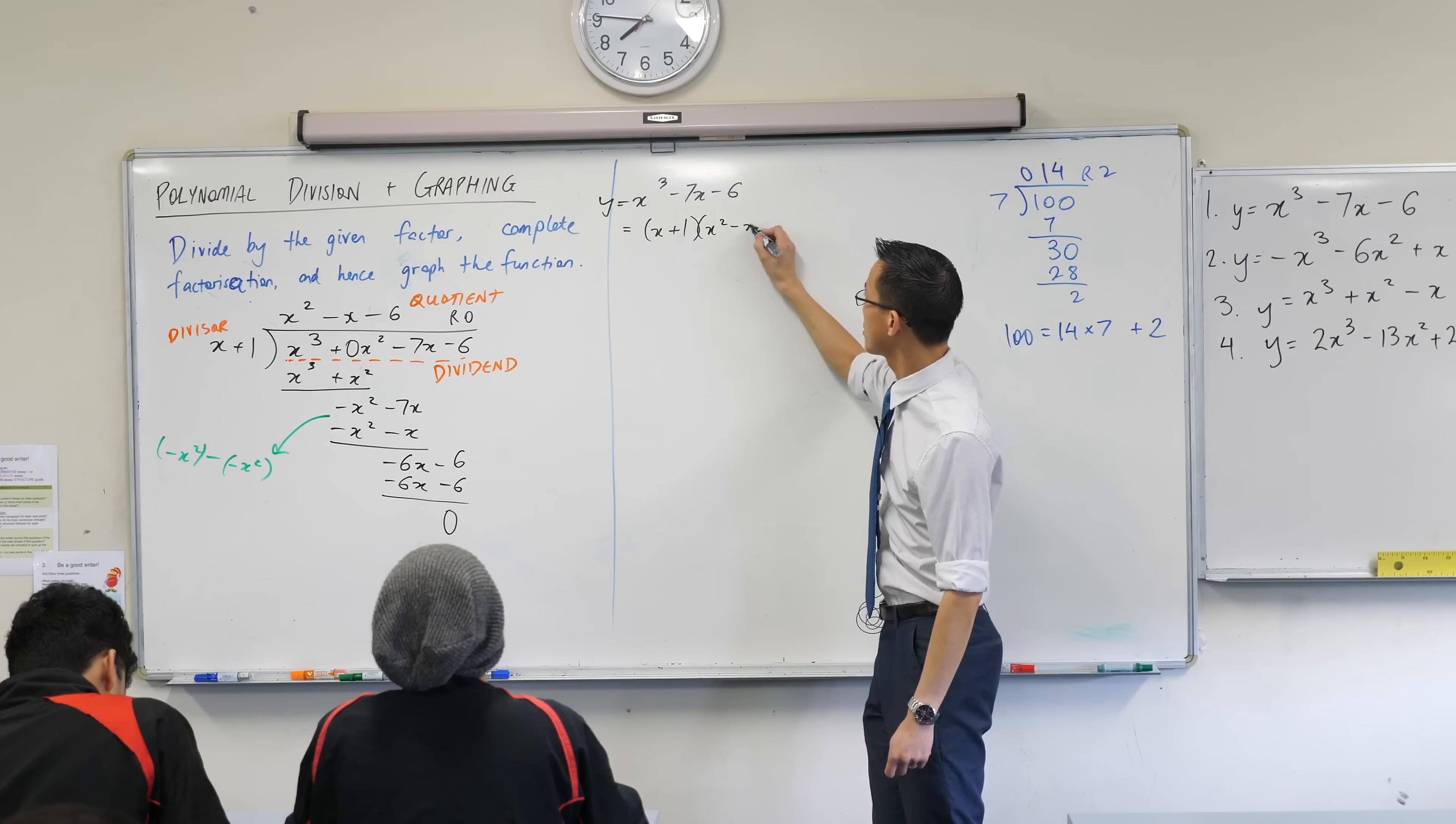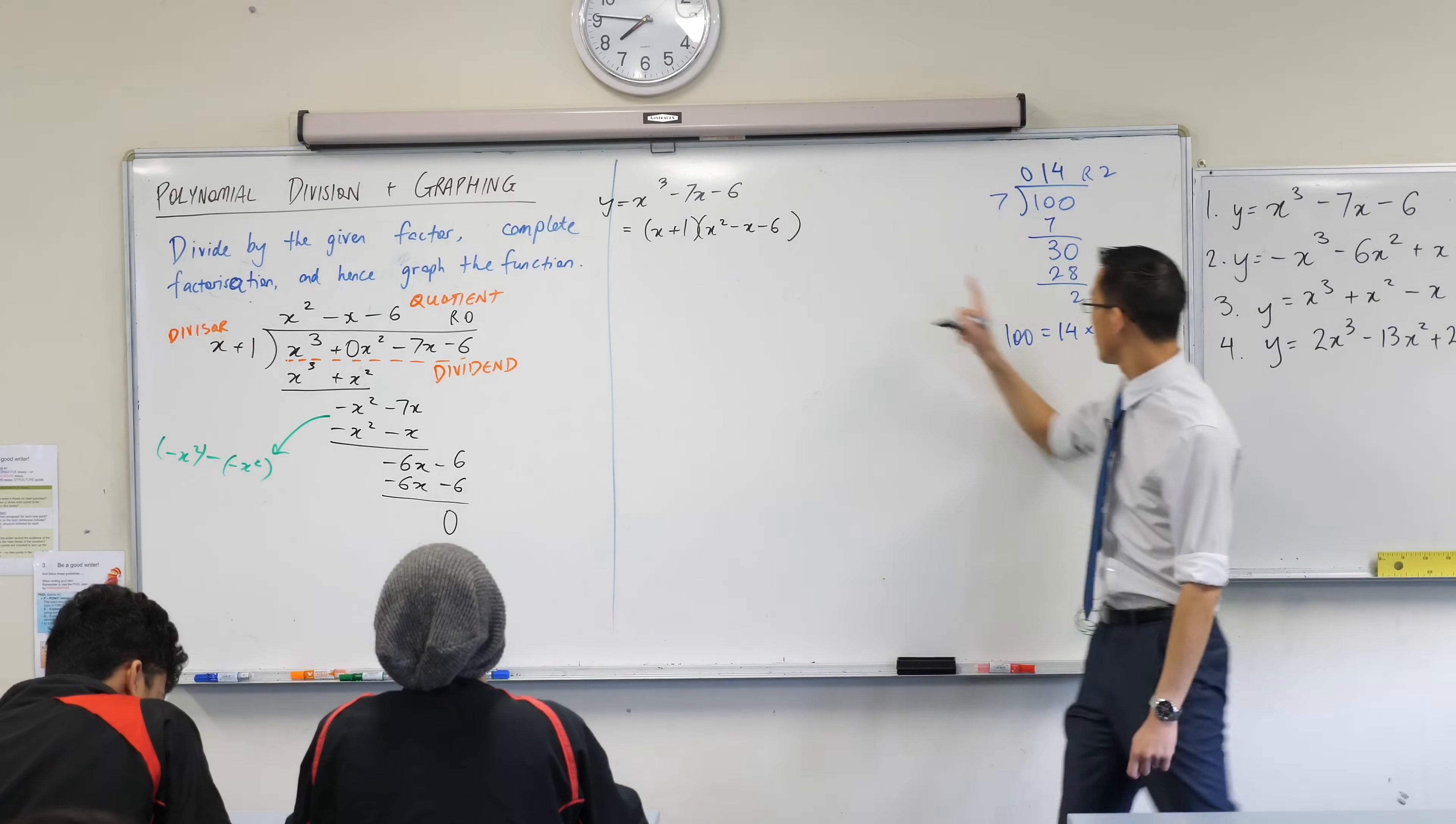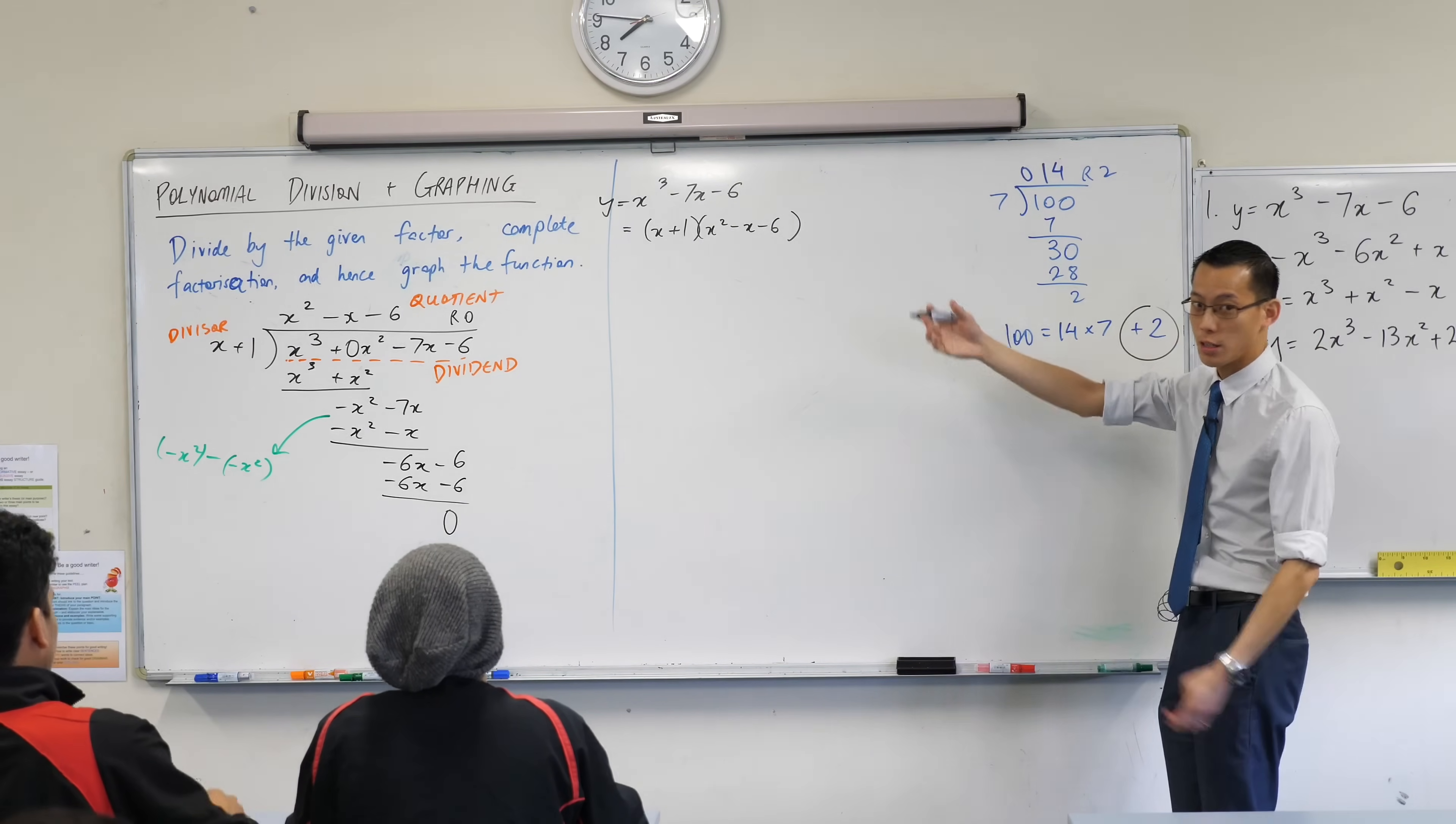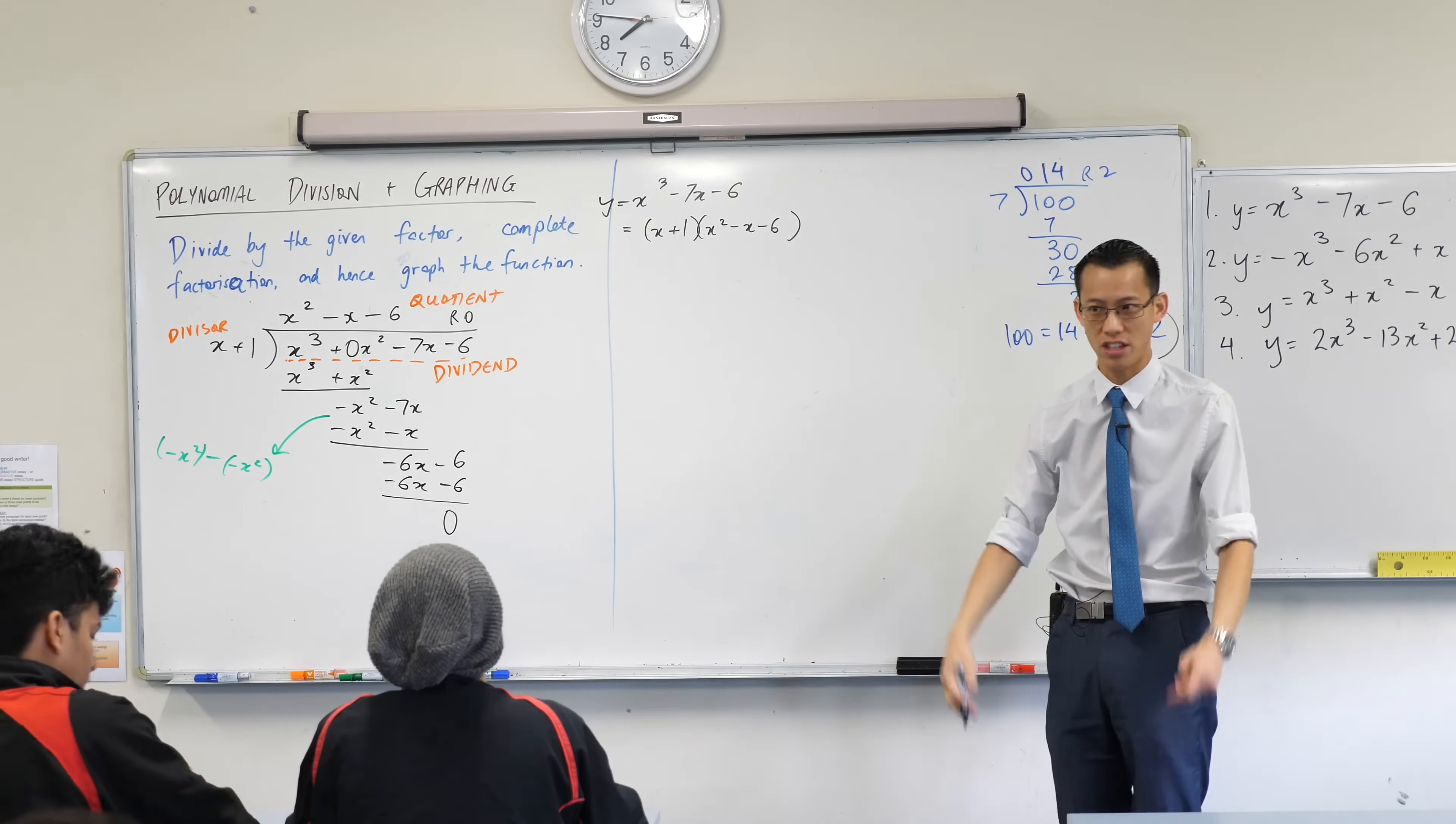And then, just like here, I add the remainder on if there is one. What is the remainder in this case? Zero. It's plus zero, so I'm just going to not write that down. It doesn't change things.